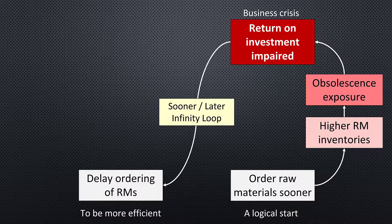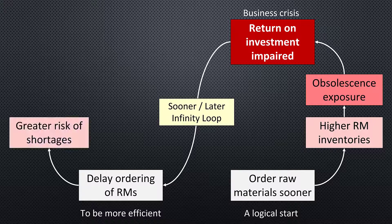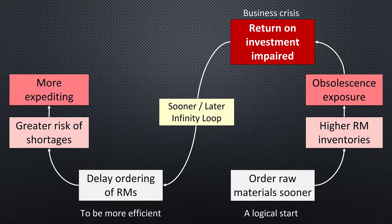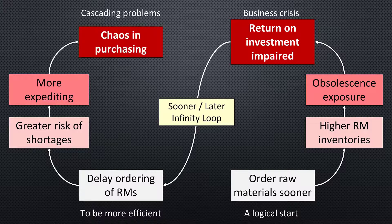To be more efficient, delay ordering raw materials — but then there's a greater risk of shortages and more expediting. So there's chaos in purchasing; there's just so much more work to be done. This is a cascading series of problems that result.